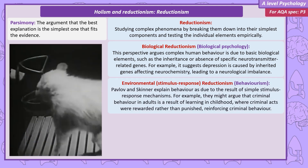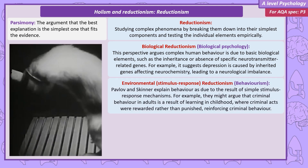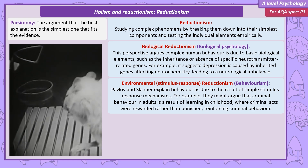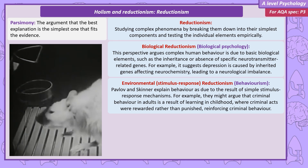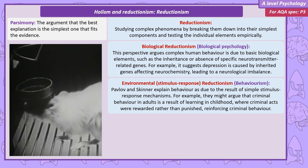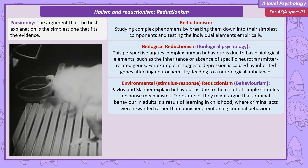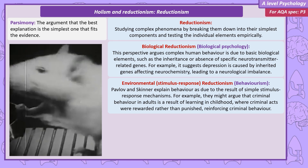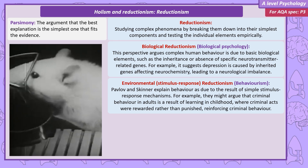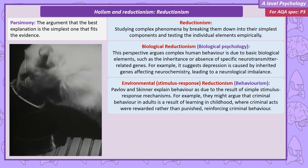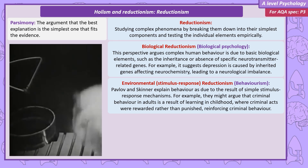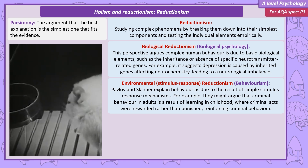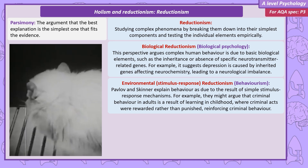Behaviourists like Pavlov and Skinner argue for environmental reductionism. They explain behaviour as being due to simple stimulus-response mechanisms. A behaviourist argument for aggression would be that someone became a criminal adult because they learnt that criminal acts in childhood were rewarded, not punished. So, their criminal behaviour was reinforced and became more common. Biological and environmental reductionism are the best examples of reductionism in psychology and we should focus on these in any essay we need to write.